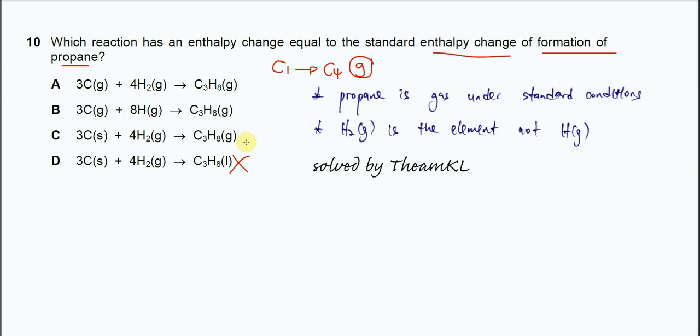And after that, you need to know the formation of this compound needs to form from its elements. In propane, there is carbon and hydrogen. Therefore, the elements must be carbon and hydrogen gas. Carbon under standard condition is solid, and hydrogen under standard condition is gas. And it must be H2, not H. This is the elements in atom. But under standard condition, these hydrogens will be in H2.